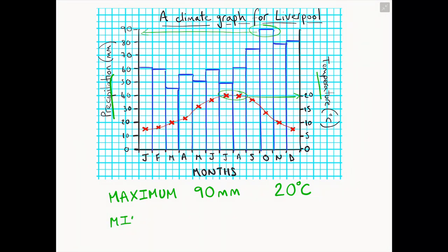Alternatively, we can be asked to find the minimum precipitation or temperature using a climate graph. So again, if we are referring to our lowest bar on this climate graph and referring back to our left-hand axis for precipitation, we can see that Liverpool has a minimum precipitation of 46 millimeters.